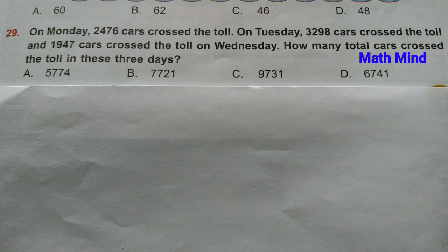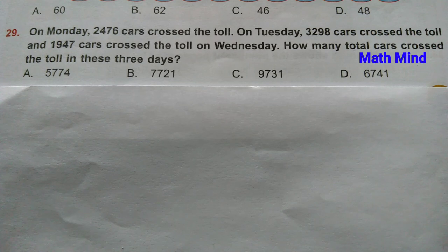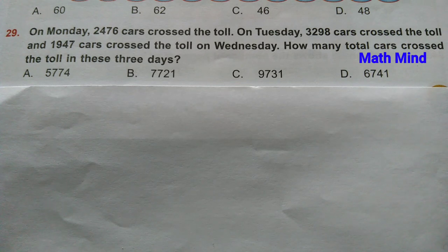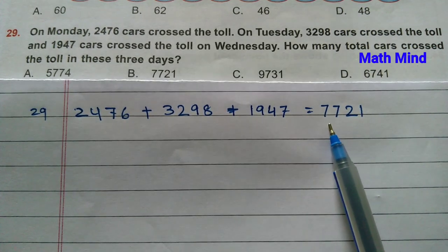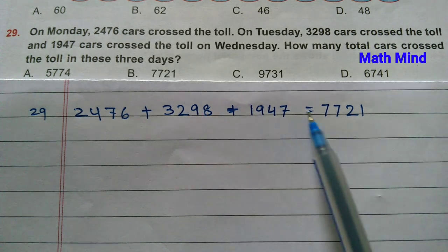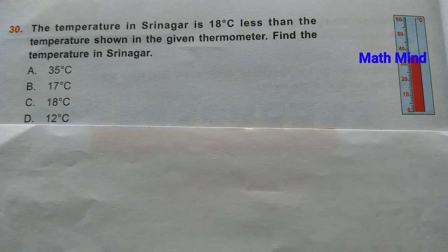Question number 29: On Monday, 2,476 cars crossed the toll. On Tuesday, 3,298 cars crossed the toll. On Wednesday, 1,947 cars crossed the toll. How many total cars crossed the toll in these 3 days? Adding all three: 2,476 plus 3,298 plus 1,947 equals 7,721. Option B is correct.